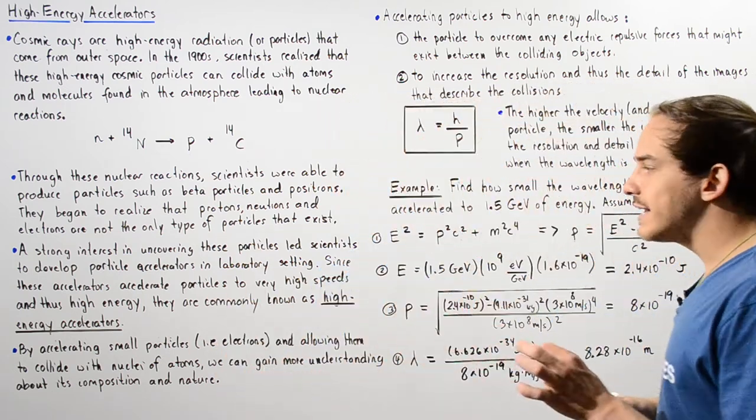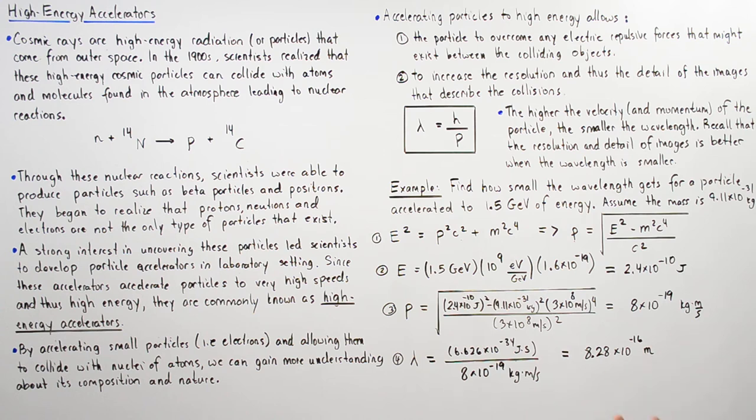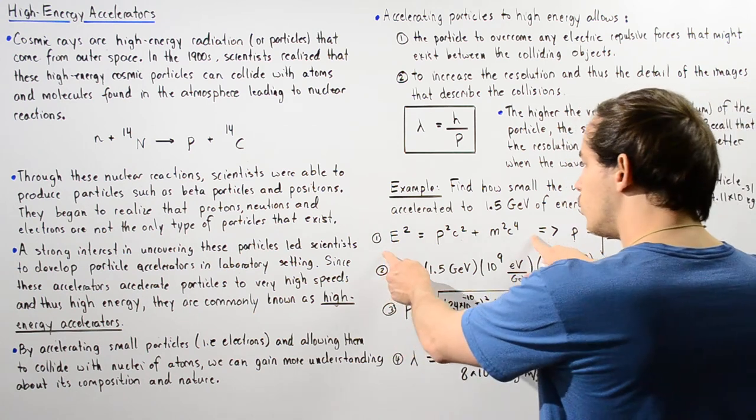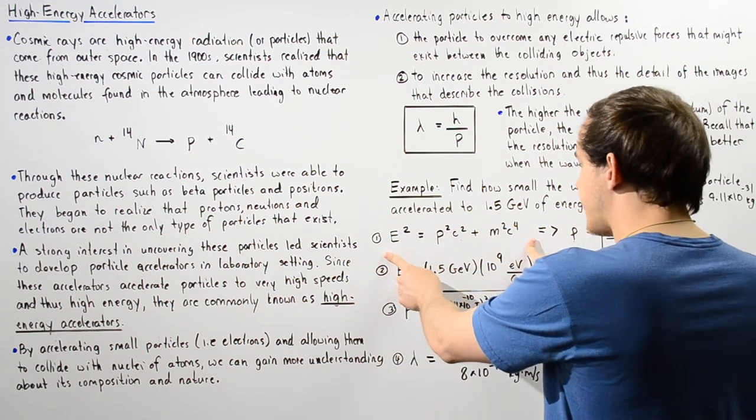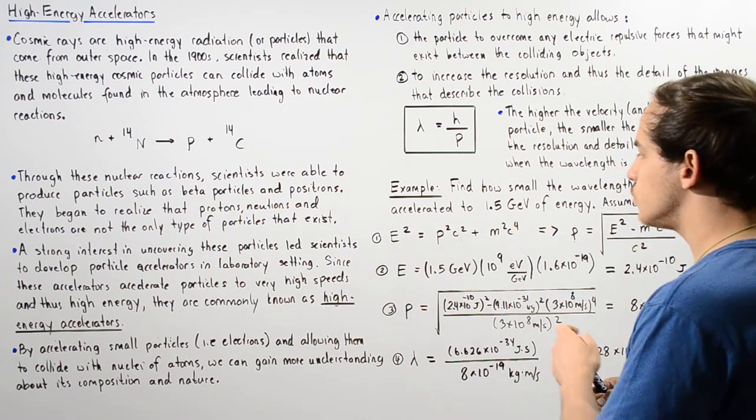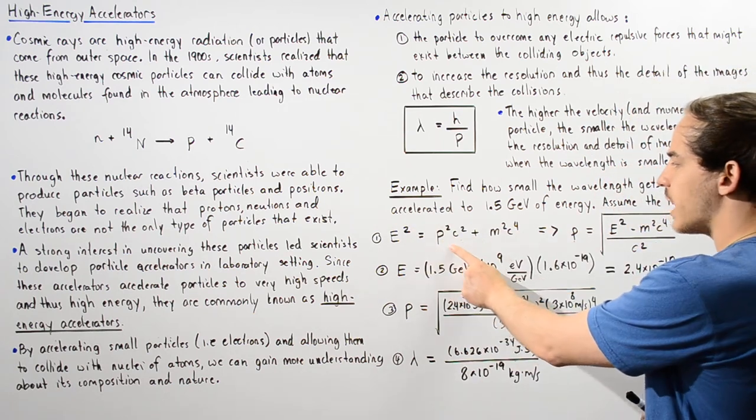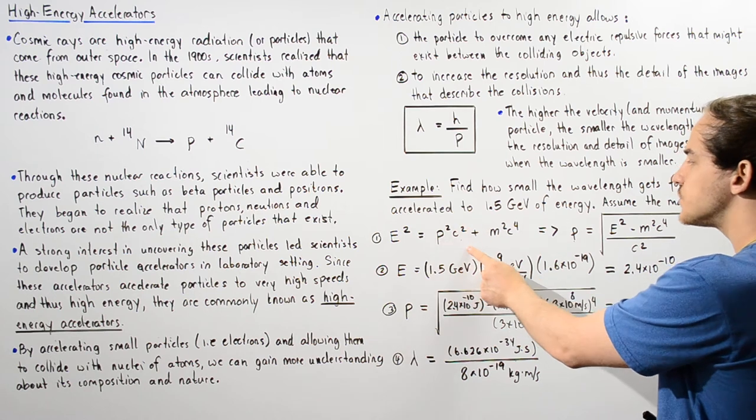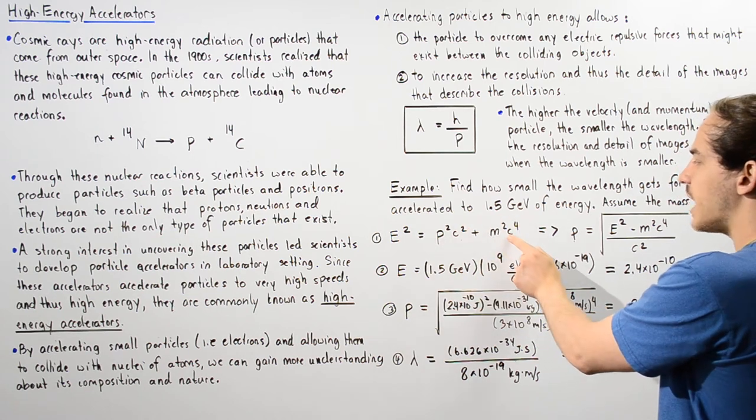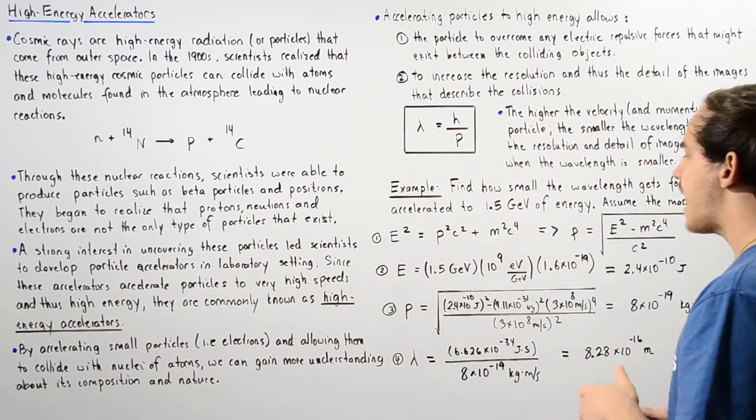we have to take into consideration the special theory of relativity. We use the following equation: the energy squared is equal to the momentum squared multiplied by the speed of light squared plus our mass squared multiplied by the speed of light to the fourth power.